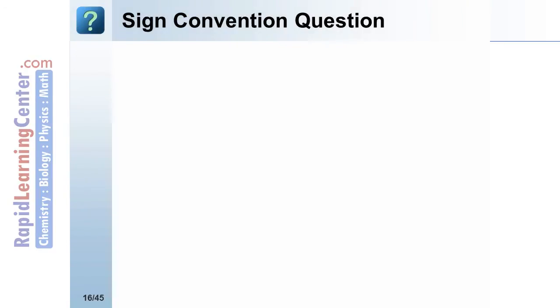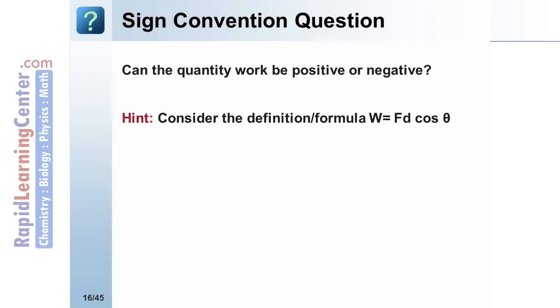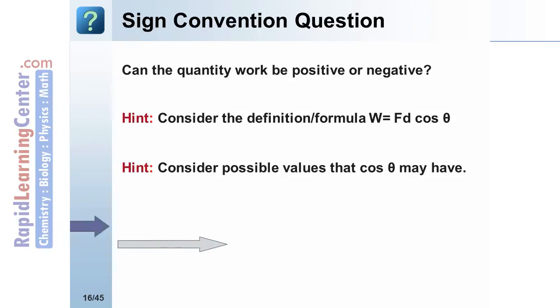Sign convention question. Can the quantity work be positive or negative? Consider the definition or formula for work. Work equals F times D times cosine theta. The important part is to consider the possible values that that cosine theta part may have.